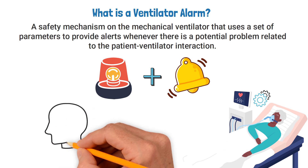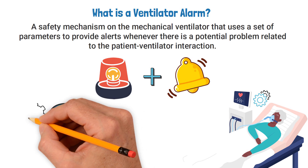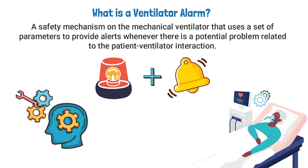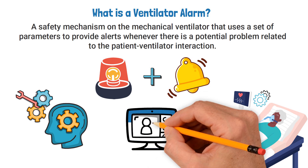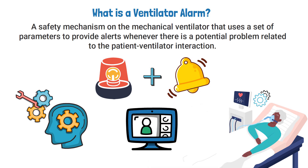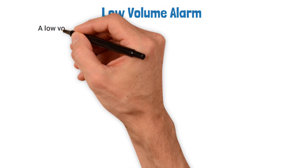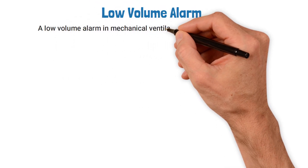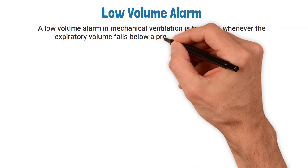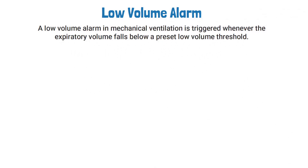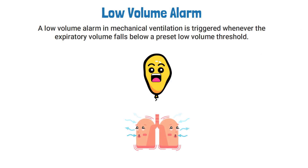In order to learn each of the different ventilator alarms, you must develop an understanding of the different ventilator modes and settings. For this video, we are specifically focusing on the low volume alarm. A low volume alarm in mechanical ventilation is triggered whenever the expiratory volume falls below a preset low volume threshold, which ensures the patient is receiving and exhaling a minimum tidal volume.